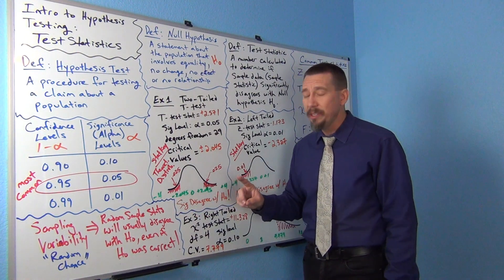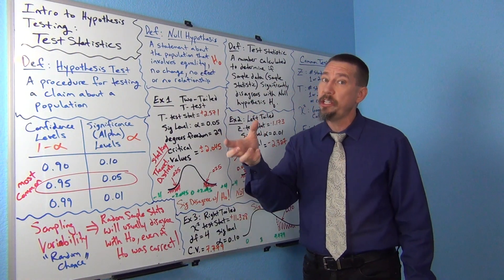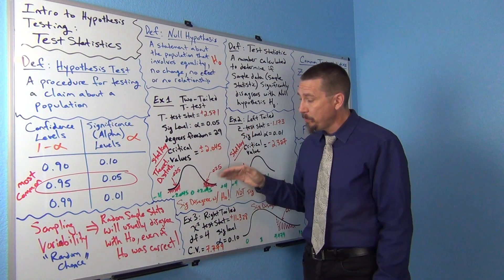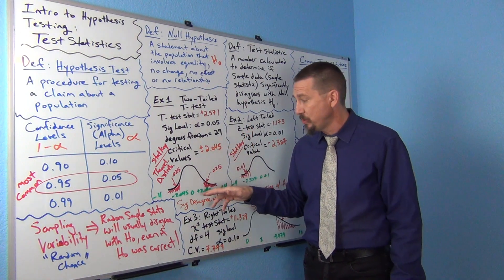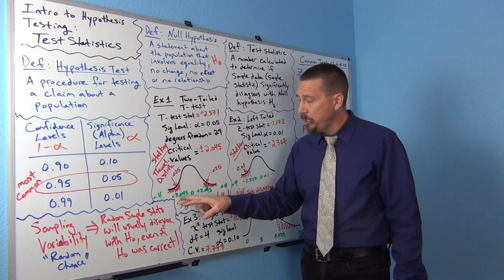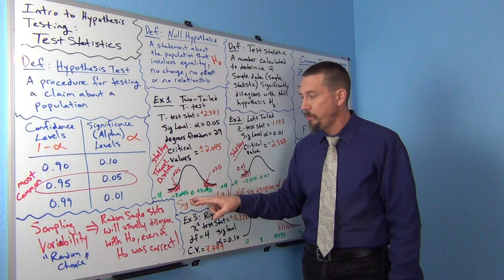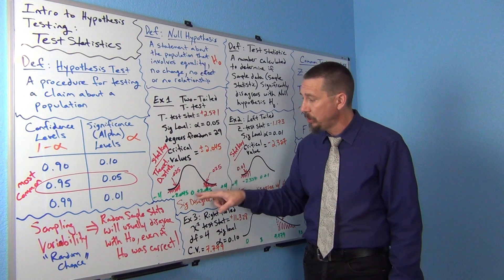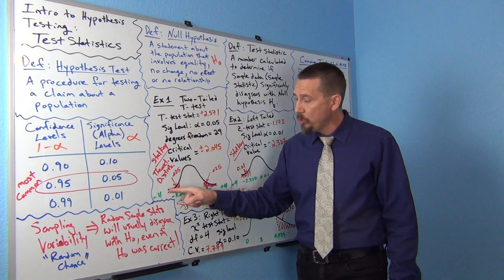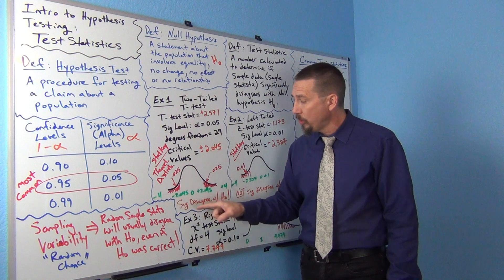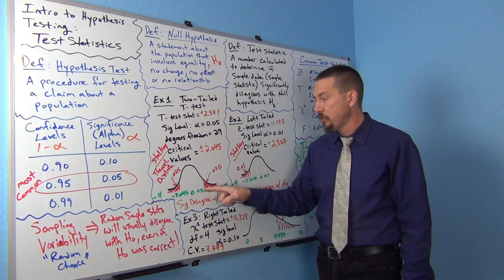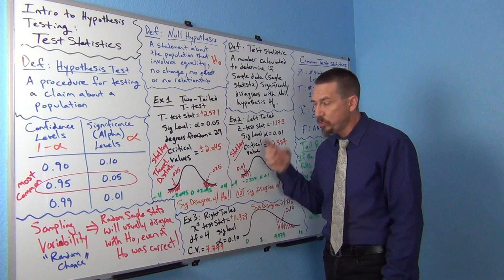Now this is really important that you have the number line in your head. A lot of people mess this up or have trouble with it, especially intro students when they don't get the number line in their head. Remember, in between negative 2 and positive 2 would be zero. Zero is sort of in the middle of a t distribution. And then if you keep going negative, this will be like negative 4 way out here. Keep going positive, you're going to get positive 4 way out here. So have those numbers in your head.